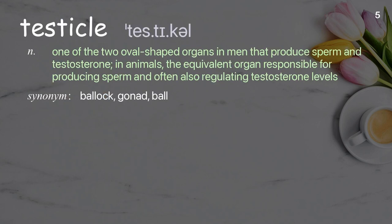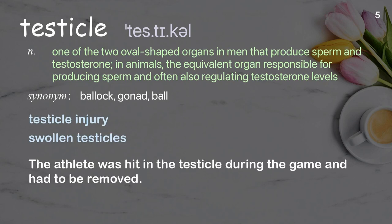Testicle: One of the two oval-shaped organs in men that produce sperm and testosterone. In animals, the equivalent organ responsible for producing sperm and often also regulating testosterone levels. Examples: Testicle injury, swollen testicles. The athlete was hit in the testicle during the game and had to be removed.